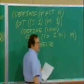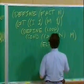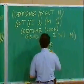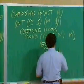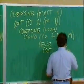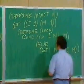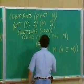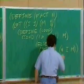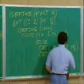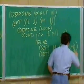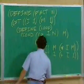Otherwise, I'm going to write down three things to do. I'm going to set m to the product of i and m, set i to the sum of i and 1, and go around the loop again.